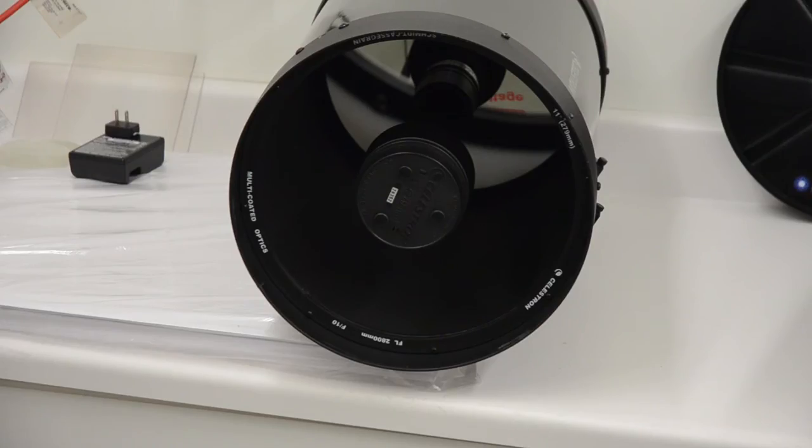After you decide between a Bahtinov or a Carey mask, your task is to select a proper model of mask for your telescope. Both Bahtinov and Carey masks come in two different fit types. If you have a Celestron or Meade Schmidt-Cassegrain telescope, Mak, Schmidt, Newtonian or the like, select a specific mask that is made to slip over the secondary mirror housing of your scope.